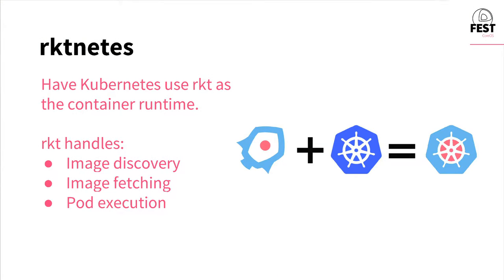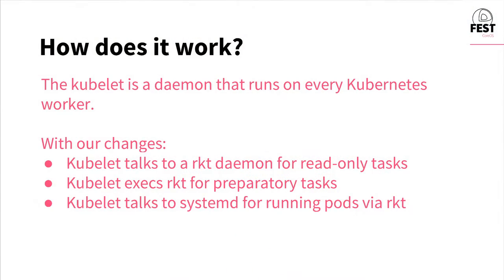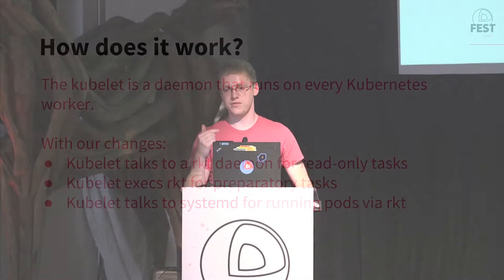The actual point of this talk: Rktnetes. Rktnetes has been our effort to add support for Rocket as the container runtime for Kubernetes. In this scheme, Rocket handles everything that Docker would — image discovery, which is turning a name like Nginx into a URL to find the image; image fetching, downloading it over the network; and pod execution, the actual running of the application. There's a part of Kubernetes called the kubelet, which is a daemon that runs on the nodes, talks to the master, figures out what should be running, and watches the pods. In the past, the kubelet would always talk to the Docker daemon.